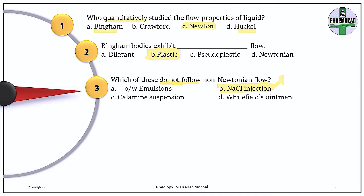The materials or fluids which follow Newtonian flow are the simplest form of fluids or solutions — they are low molecular weight or plain solvents. Something more complex, concentrated, or of higher molecular weight — polymers which are more viscous and concentrated — they follow non-Newtonian flow, such as calamine suspension, emulsion, and ointment. So the one which does not follow non-Newtonian flow is NaCl injection.